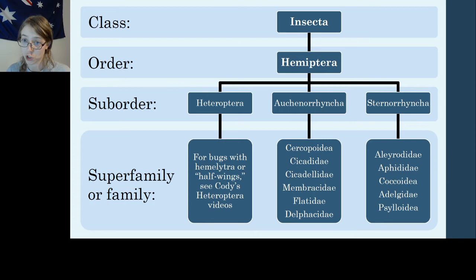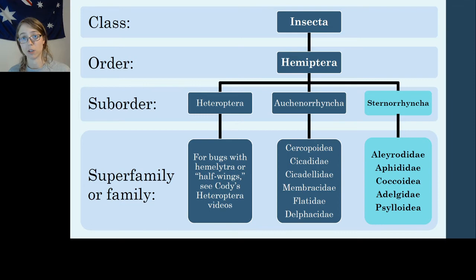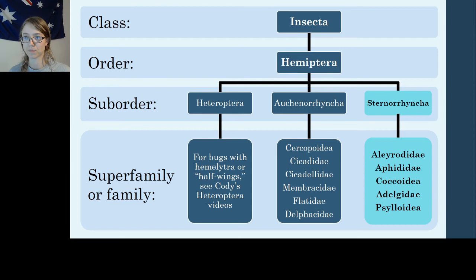To orient you to our Hemiptera family tree, in this video I'll be covering Sternorhynchans — basic life history, ecology, and identification features. In the next videos of this series I'll be covering five common families: Aleyrodidae (the whiteflies), Aphididae (the aphids), Coccoidea (a superfamily including scales and mealybugs), Adelgidae (the spruce aphids — they're not really aphids but they live on spruce), and finally superfamily Psylloidea (the jumping plant lice).